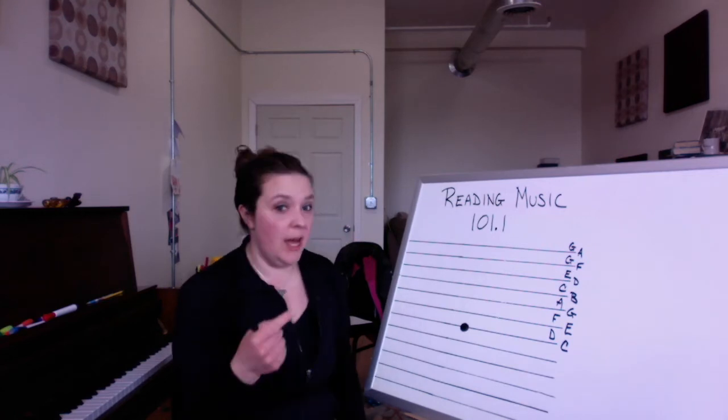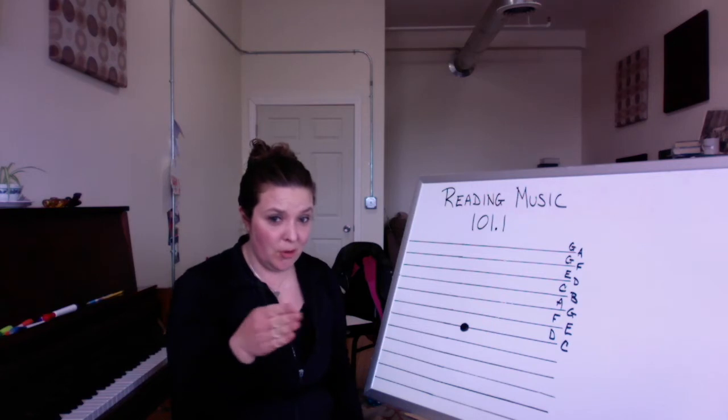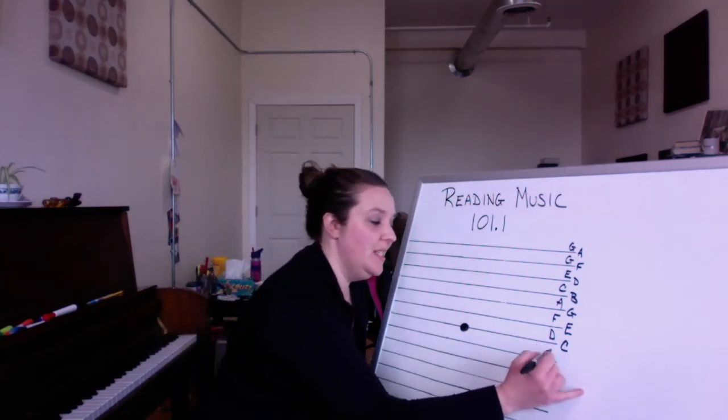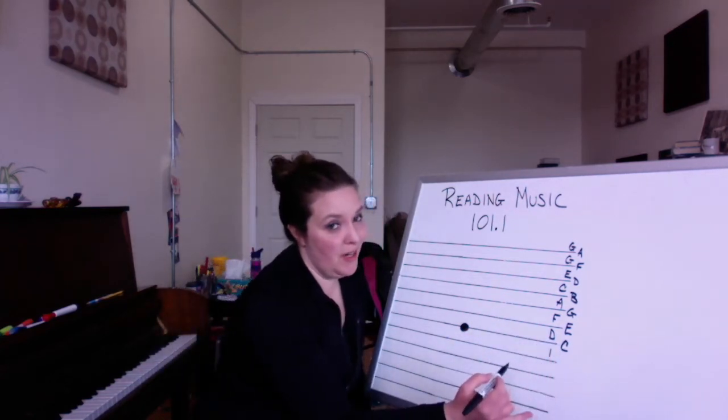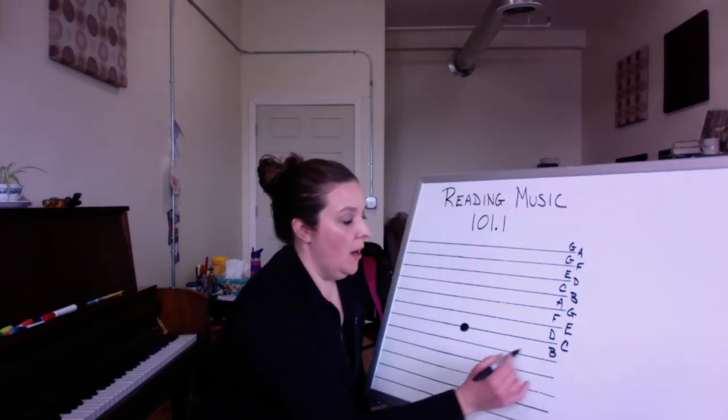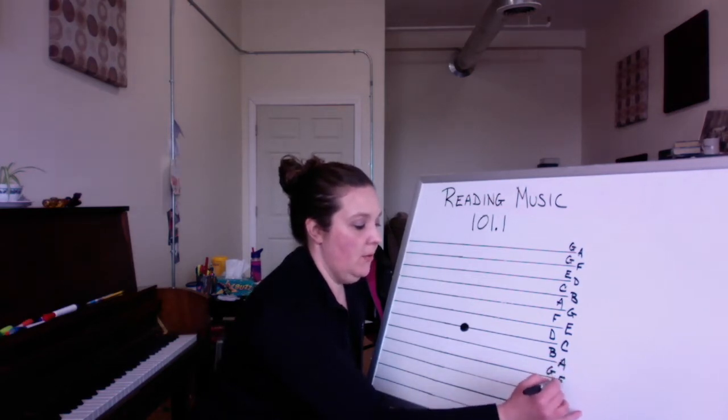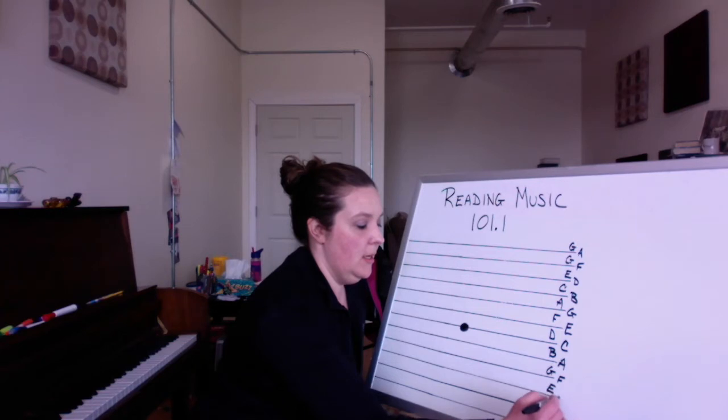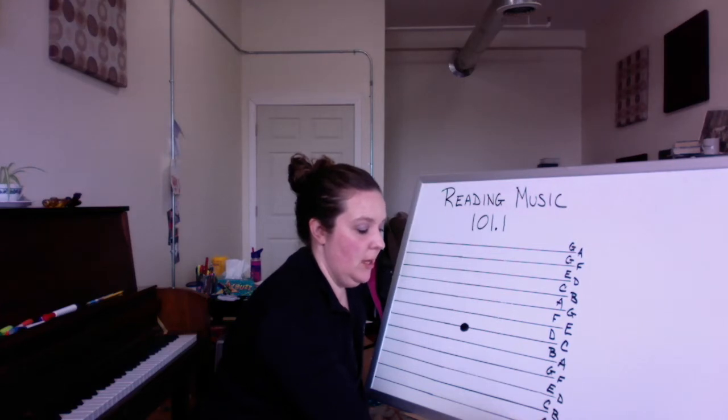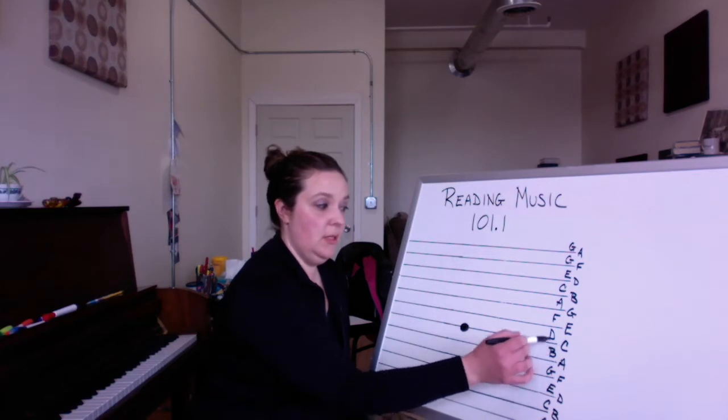And now going down, I have to go backwards. That's why musicians always know our alphabet forwards and backwards, but only up to G. Some musicians might know forwards and backwards the whole thing. I do not. C, B, A, G, F, E, D, C, B, A, G, and F. I have to check.